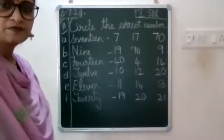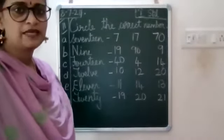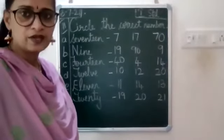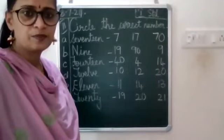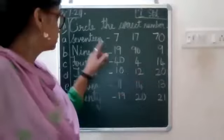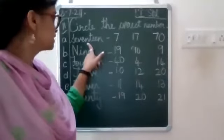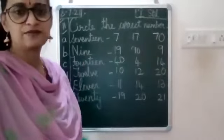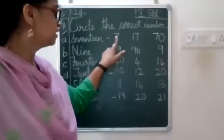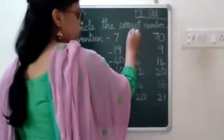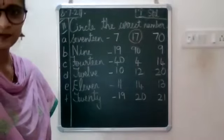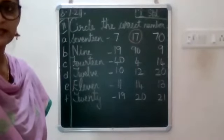All of you have taken down the sums. Please make sure that your classwork is neat. Now we will work out the sums. Now 17 — which number is 17 in the first one? Very good — so you will circle 17.